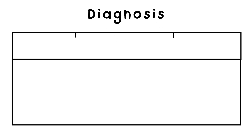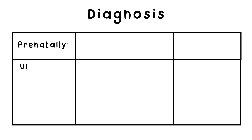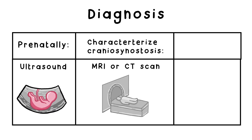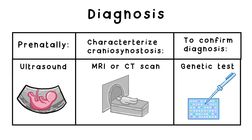The features of Apert Syndrome can usually be recognized at birth and sometimes even prenatally via ultrasound. An MRI or CT scan of the skull may be needed to confirm and characterize craniosynostosis. To confirm the diagnosis, a genetic test identifying an activating mutation in FGFR2 confirms the diagnosis of Apert Syndrome.